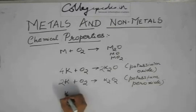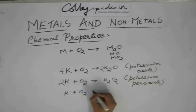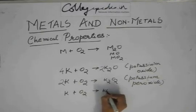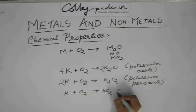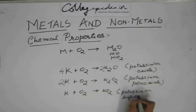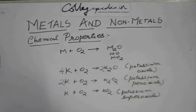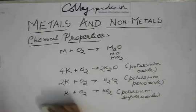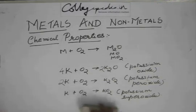Or it can also form KO2, which is known as potassium superoxide. Here we have the radical O2- and K+. Only potassium can form superoxides; sodium cannot form them.